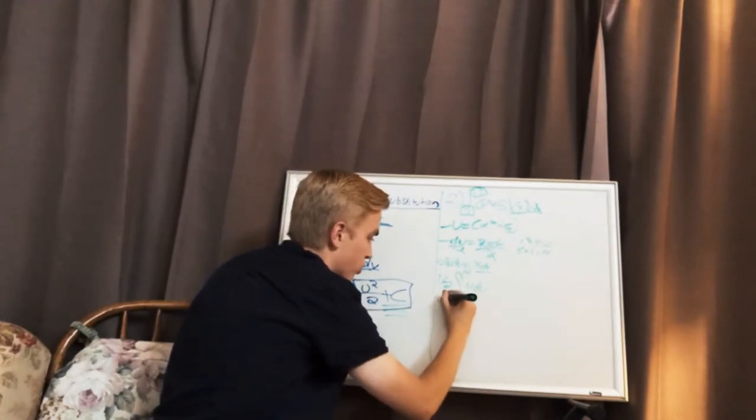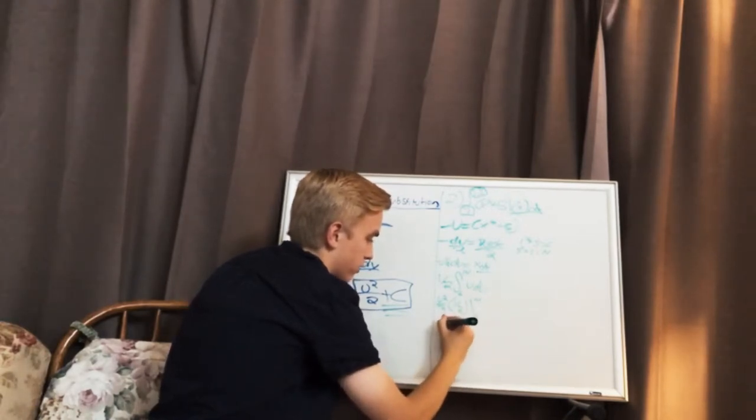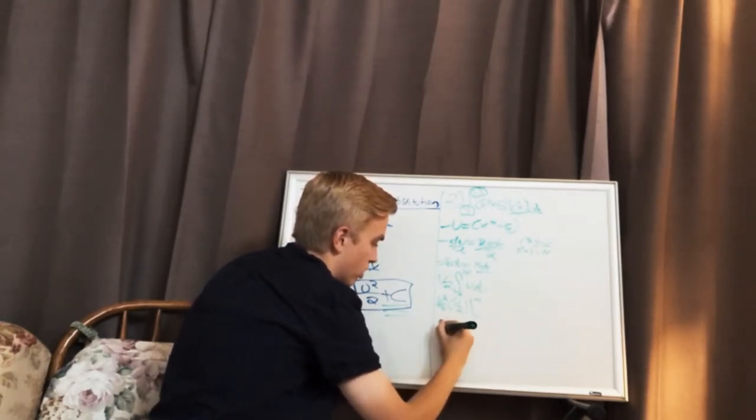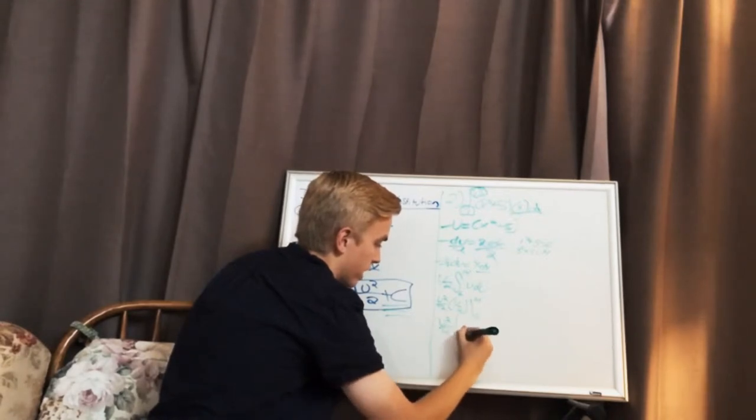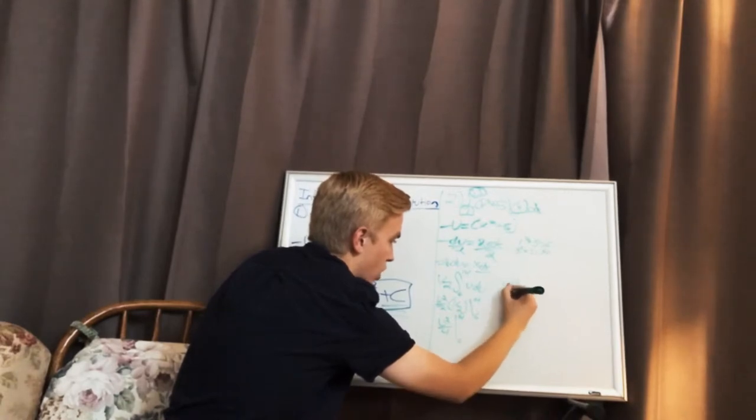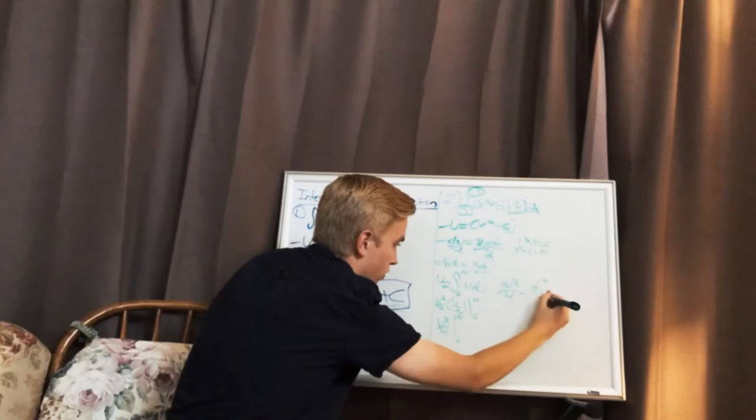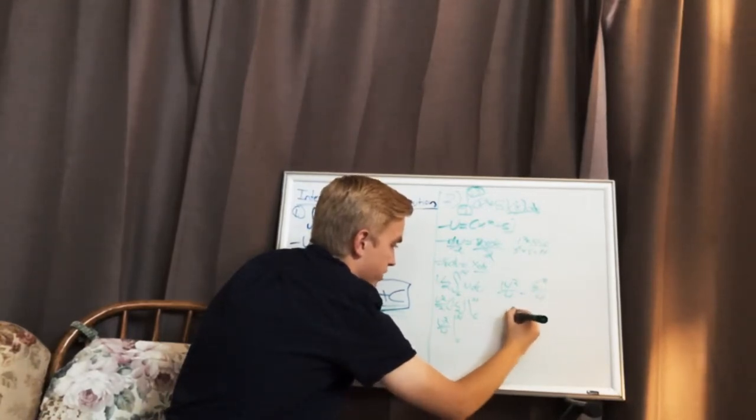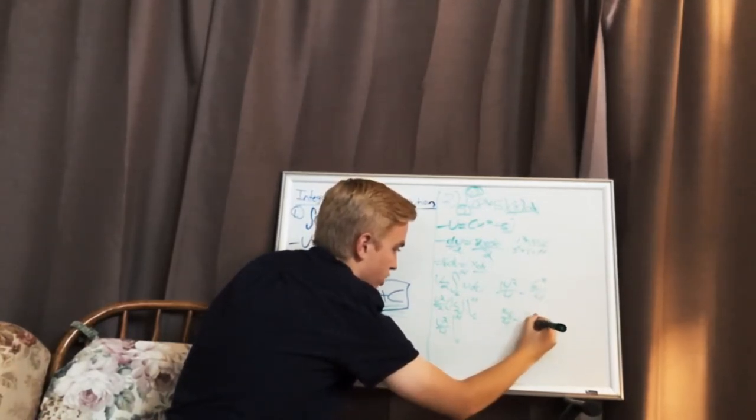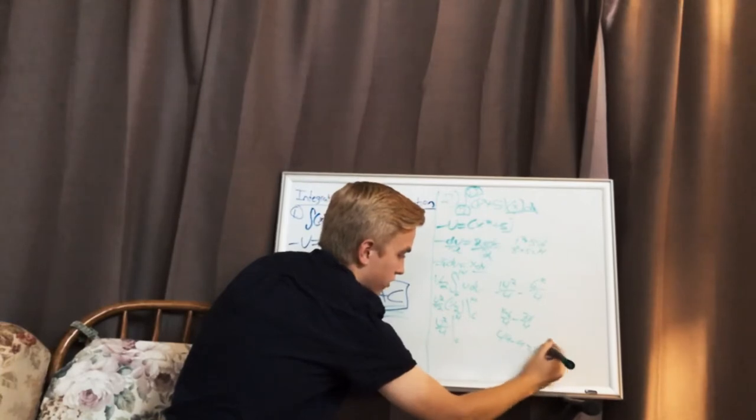We have u squared over 2 times 1 half evaluated from 6 to 14. That reduces to u squared over 4 evaluated from 6 to 14. Meaning we have 14 squared over 4 minus 6 squared over 4. 196 over 4 minus 36 over 4 gives us 49 minus 9, giving our final answer of 40.